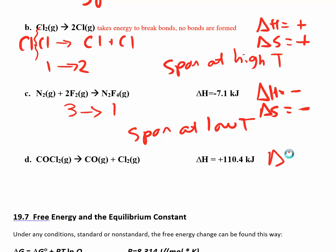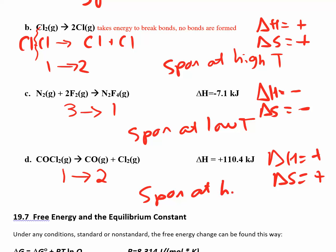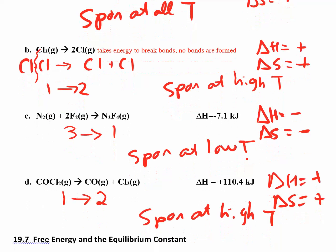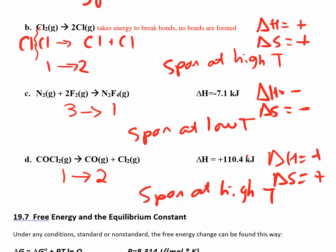For the last one, delta H is positive. We have all gases again — one mole of gas going to two moles of gas — so delta S is going to be positive. So this will also be spontaneous at high temperatures. Notice there are four cases, and we didn't use them all: one was spontaneous at all temperatures, two were spontaneous at high T, and one was spontaneous at low T. On a quiz or exam, don't expect to have to use all four of them.